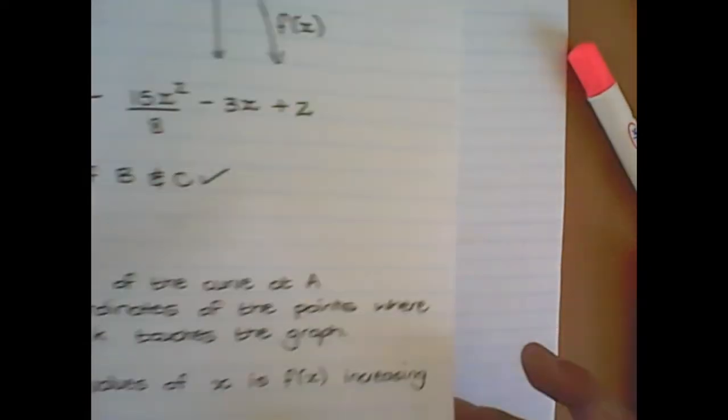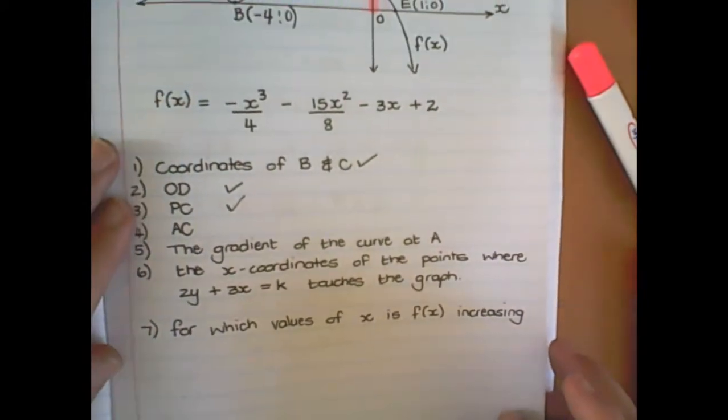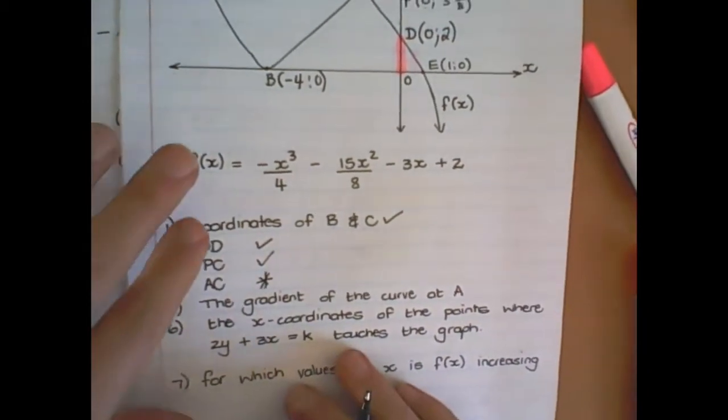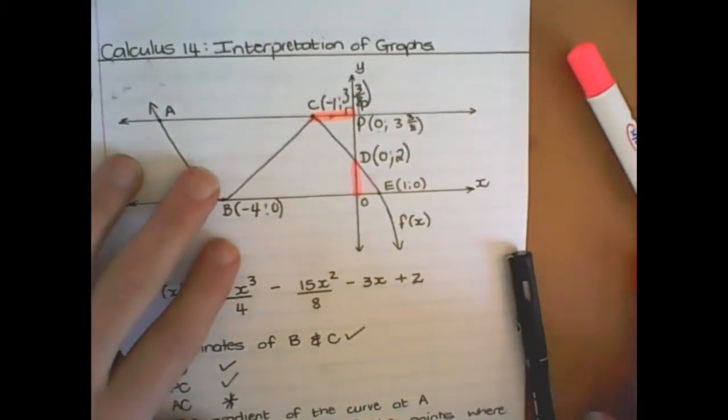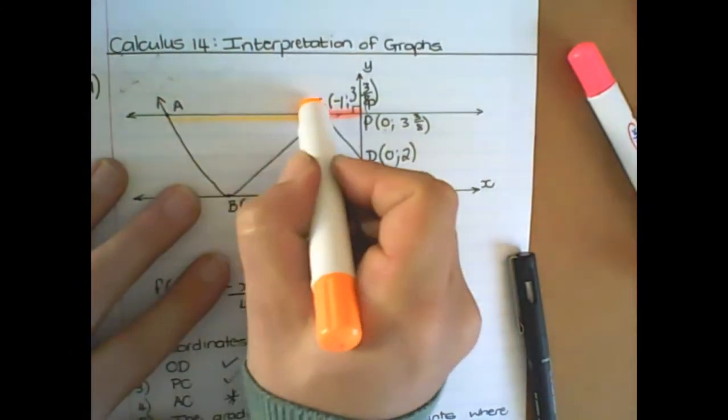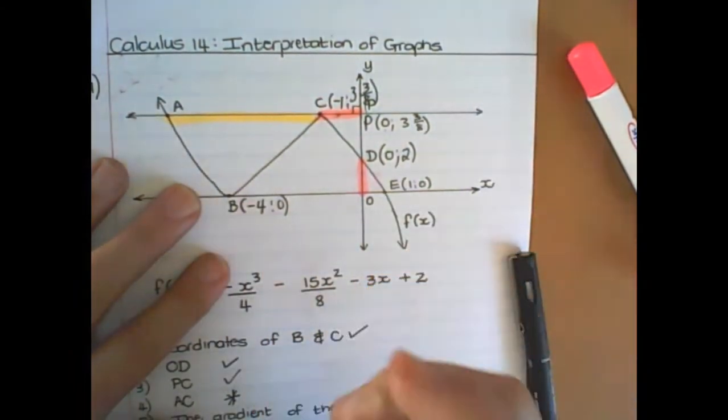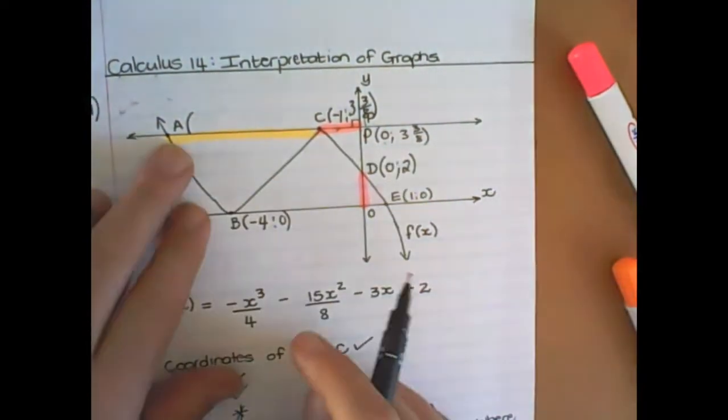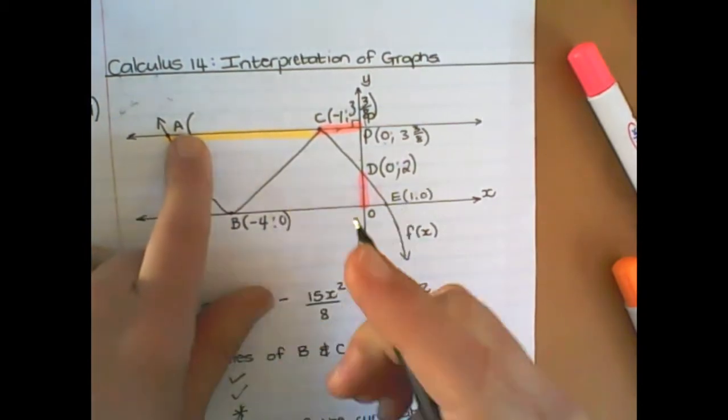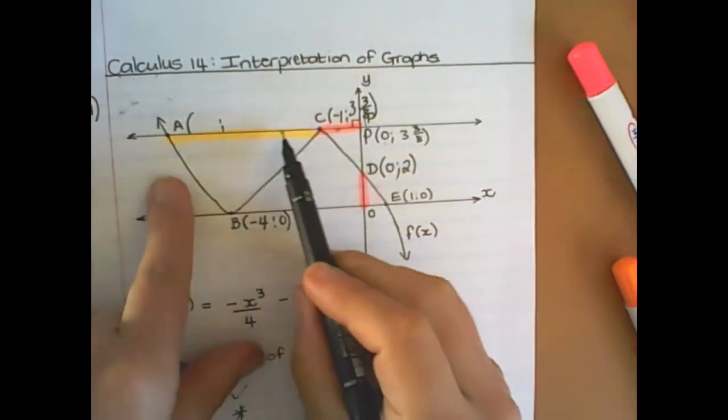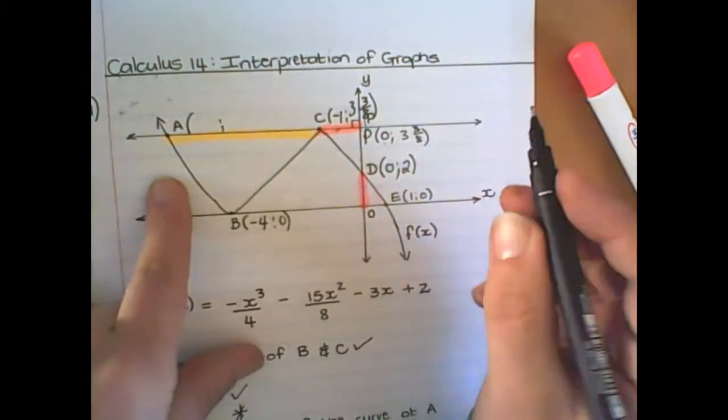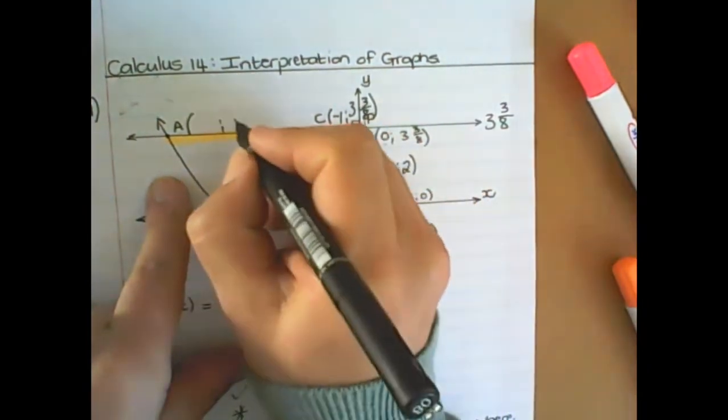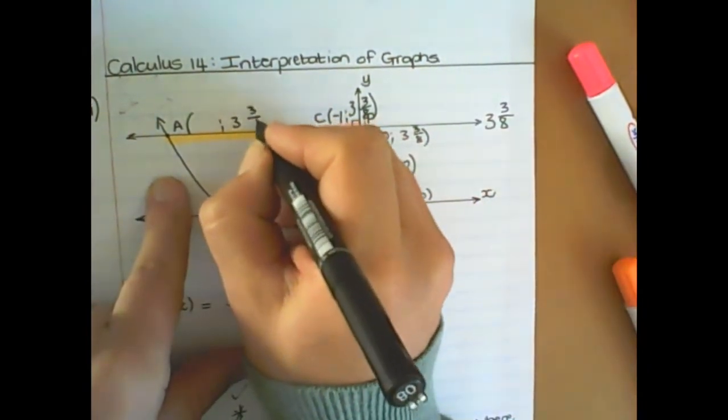The next one is where it gets a little bit tricky. So it's finding the distance of a, c. So a, c is this whole part here, right? And what we know about the coordinate of a is we don't have the x-value, but we do have the y-value. Because this line is horizontal, all of the y-values would be the same, which is 3 and 3-8, which we found in the first question. Okay?